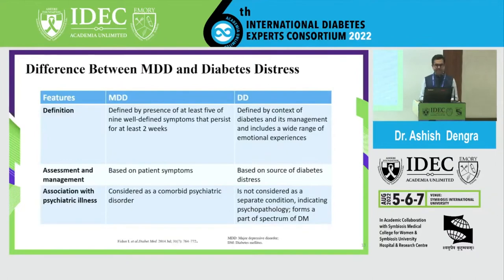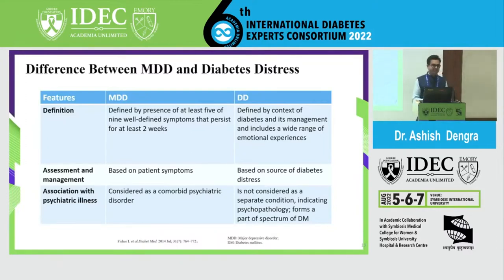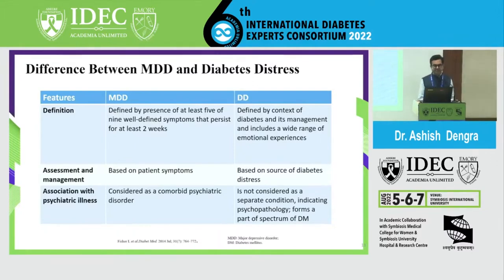The major differences between MDD and DD: major depressive disorder must have at least 5 of 9 well-defined symptoms persisting for at least 2 weeks — such as not having thrill in activities, feeling depressed, not eating properly, or overeating. It is considered a comorbid psychiatric disorder. In contrast, diabetes distress is defined by the context of diabetes and its management and includes a wide range of emotional experiences based on the source of distress; it is not considered a separate psychopathological condition.